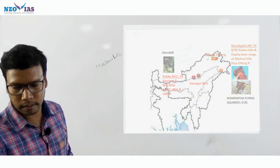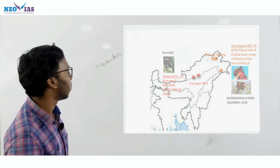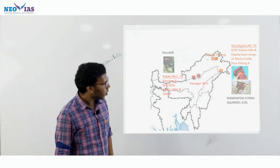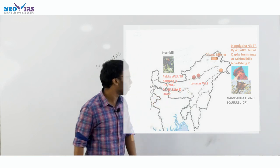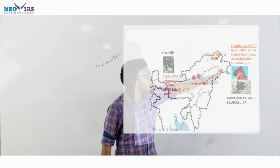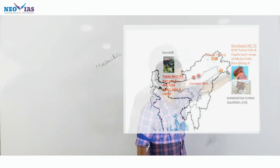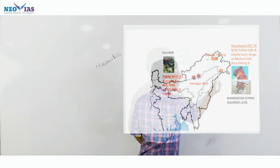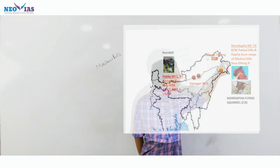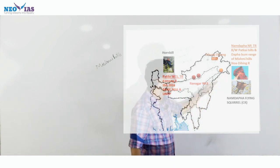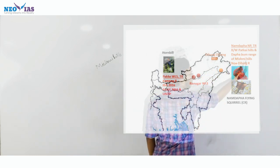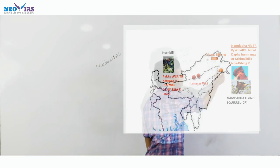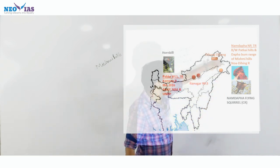Other protected areas in Arunachal Pradesh: this one will be Namdapha, and here we are having Patkai Hills. So, Namdapha National Park is located between Patkai Hills and the Dafla range of Mishmi Hills. Here we have Mishmi Hills and here we have Patkai Hills. In between Patkai Hills and the Dafla range of Mishmi Hills, we are having Namdapha National Park.